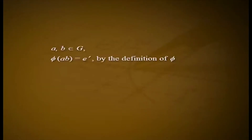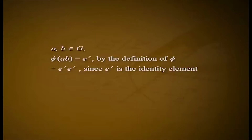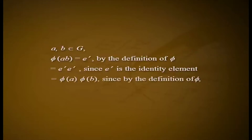We verify that phi defined as above is a homomorphism. For A, B belonging to G: phi of AB equals E dash by definition of phi, which equals E dash into E dash since E dash is the identity element, which equals phi of A into phi of B since by definition phi of A equals E dash, which equals phi of B.